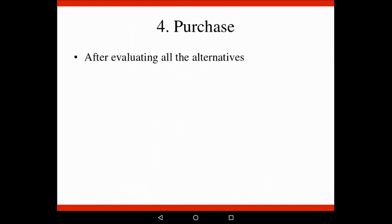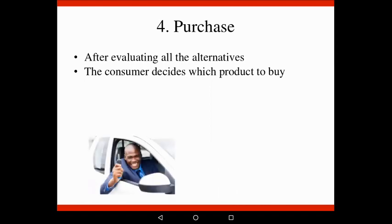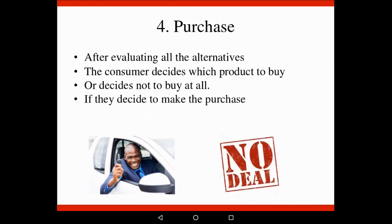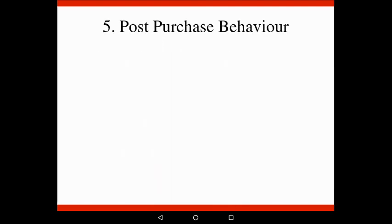Step four is very quick. After a consumer has evaluated all the different alternatives, they will decide to either buy the product they want, or they might decide not to buy at all - for example, they can't find any product that suits their needs or any deal that works for them. If they decide to make the purchase, the next step in the process is an evaluation of the product after the purchase.